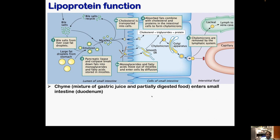First we are going to talk about chylomicron function. Chylomicrons are formed in the intestine and they carry our exogenous fat, particularly triacylglycerol and cholesterol, from food and subsequent digestion. They take these molecules and supply them to the tissues. Basically a chyme will enter into the small intestine — that is a mixture of gastric juice and partially digested food from the stomach.